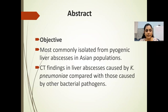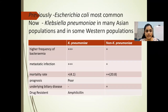Abstract. The objective of my study is to compare CT findings in liver abscesses caused by Klebsiella pneumoniae with those caused by other bacterial pathogens. Klebsiella pneumoniae is the most commonly isolated organism from pyogenic liver abscesses in Asian populations. Previously, the most common organism was E. coli, but now it is Klebsiella pneumoniae in many Asian and some Western populations.